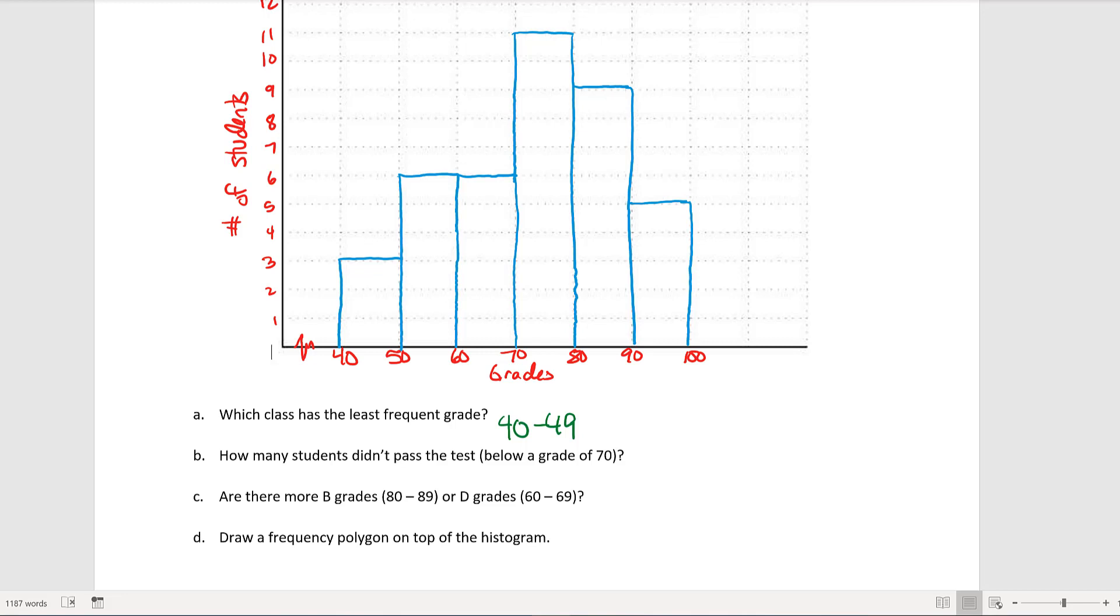How many students didn't pass the test? That means below a grade of 70. So we have 3 students in the 40 category, 6 students in the 50 to 60, and another 6 from 60 to 69. When I add all those up, I get 15 total students did not actually pass the grade with a 70 or higher.